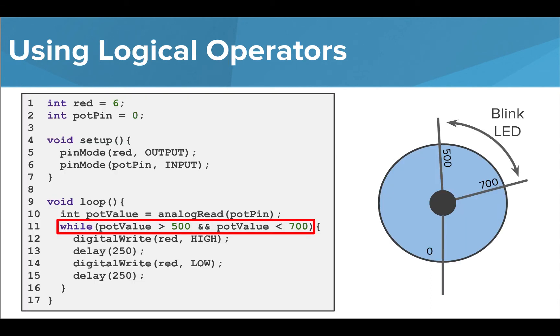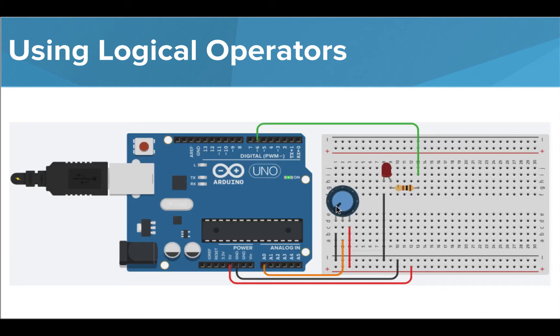To use these operators inside our Arduino programs, just write the entire condition inside the parentheses. In this case, we're using a variable called potValue that is set to the value of the potentiometer to determine if an LED should blink. Using the AND operator, our LED should only blink when the potentiometer reads a value between 500 and 700. And we can see that when we run this program, that's exactly what happens.